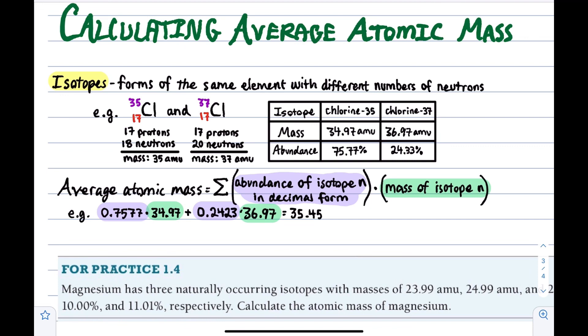However, neutrons we can change around. Because they're neutral, they don't have any charge, and the defining characteristic of our element is how much positive charge, or how many protons it has in its nucleus.